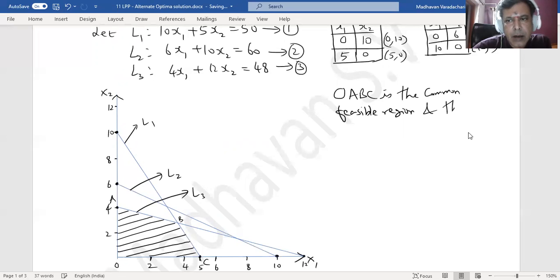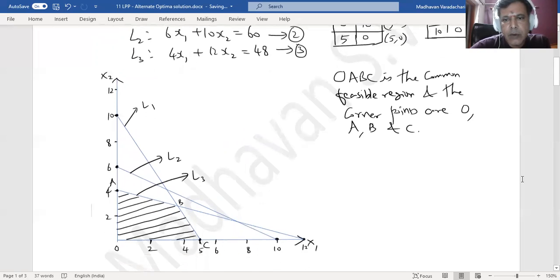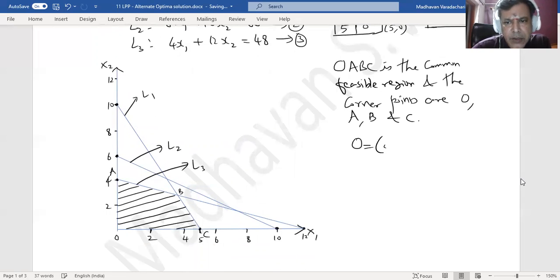And the corner points are O, A, B, and C. Now what is O? It is nothing but the origin (0,0). Then A is (0,4). B is what? You may notice it is the intersection of line 3 and line 1, so L₁ intersection L₃. What is C? It is (5,0).